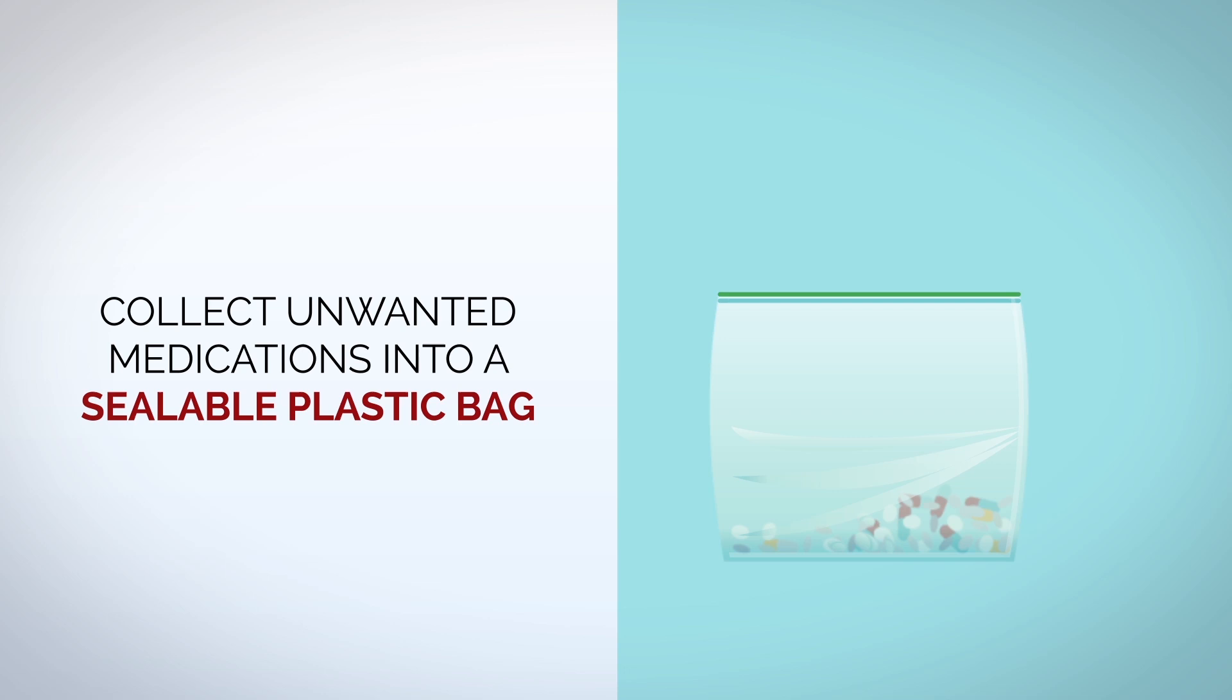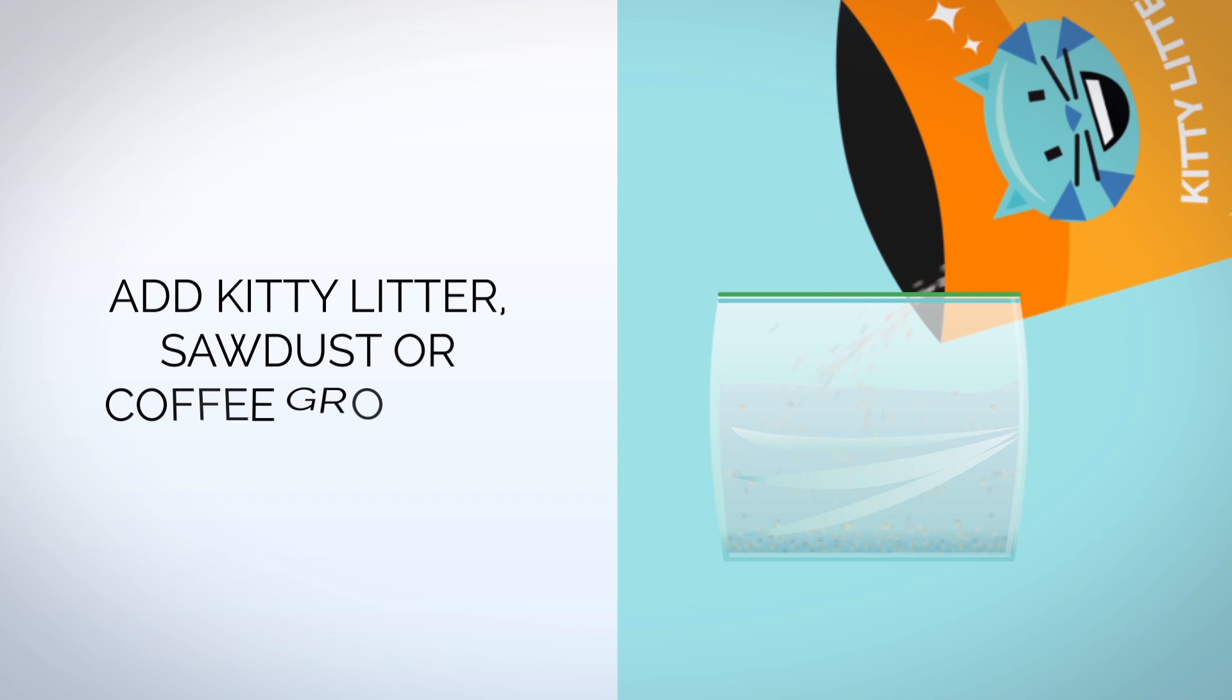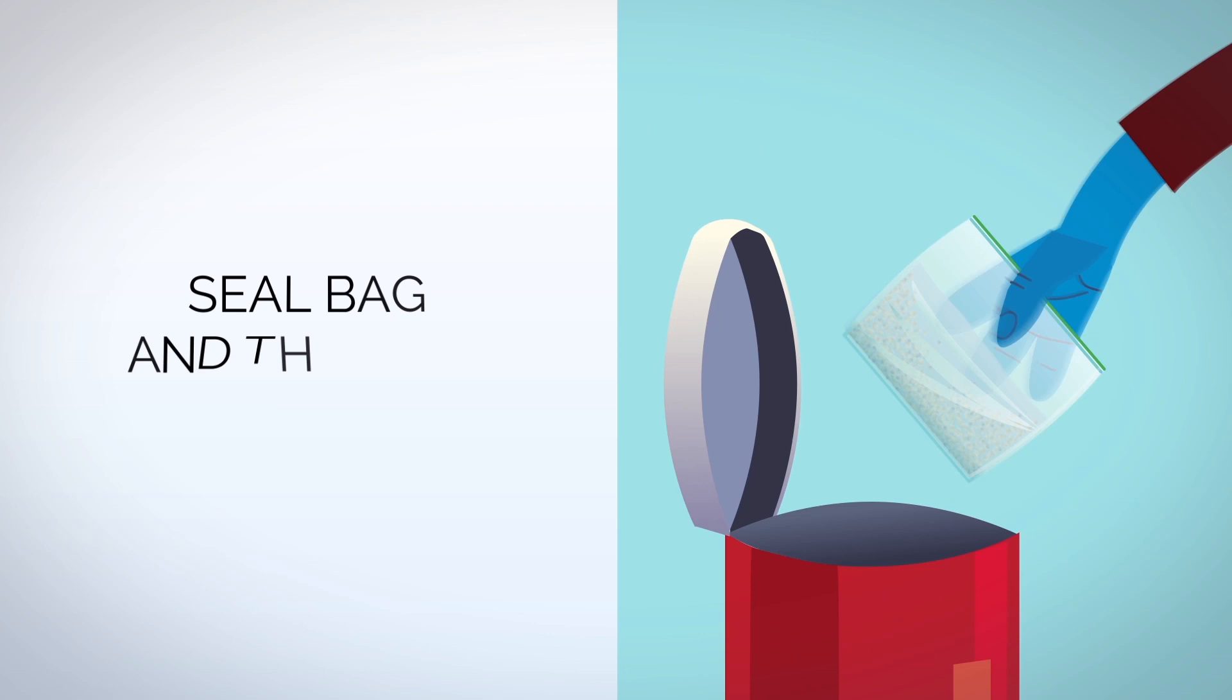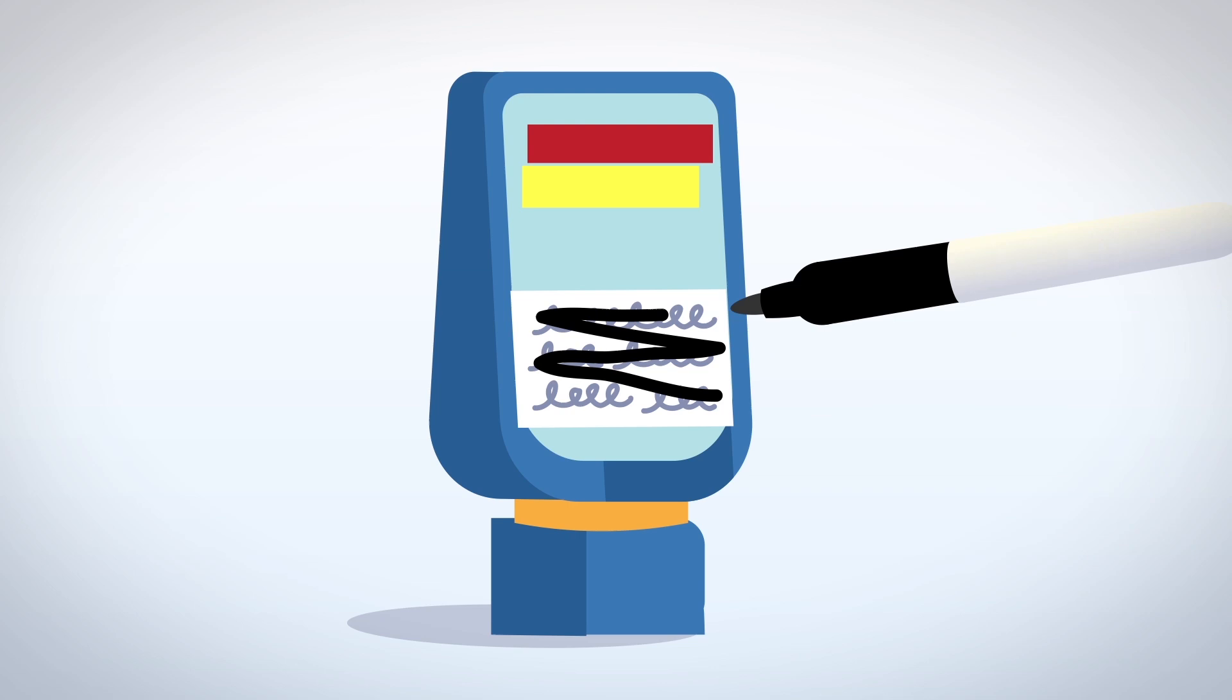Follow these simple guidelines. Collect all of your unused or unwanted medications and empty them into a sealable plastic bag. Add water to dissolve the solid medicine. Add kitty litter, sawdust, or coffee grounds to make the solution less desirable to pets, children, and strangers. Seal the plastic bag and throw it in the trash. And one more thing.